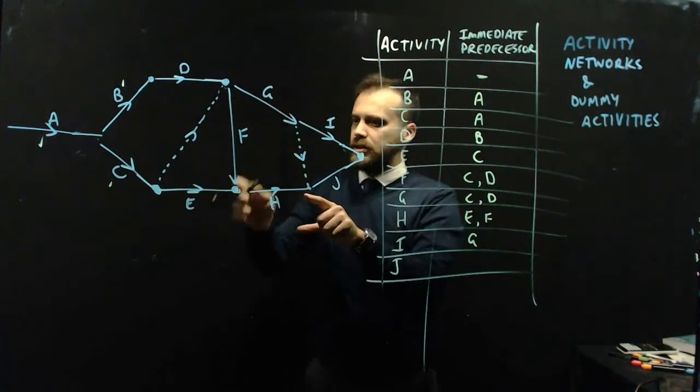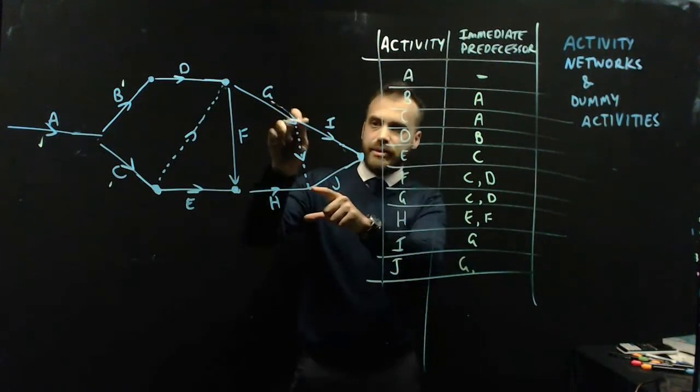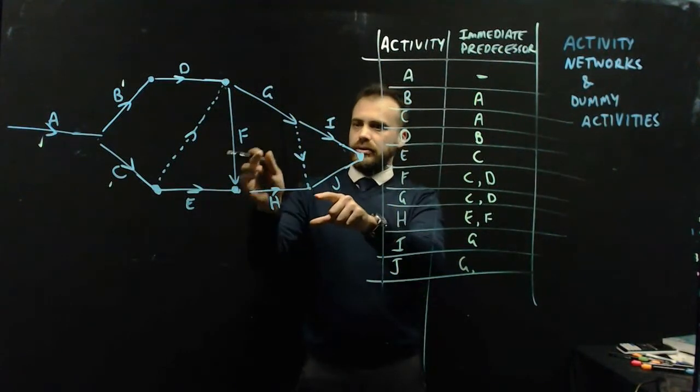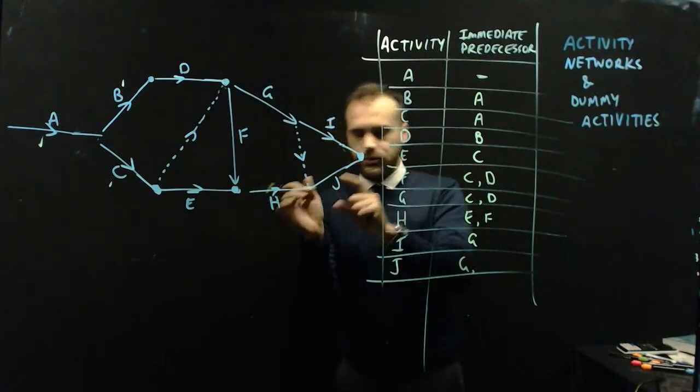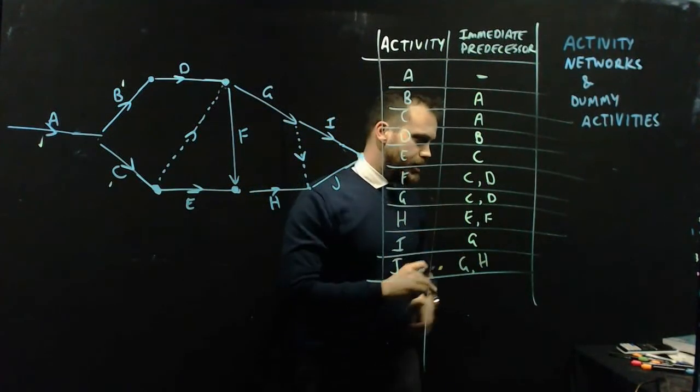Which means that J has an immediate predecessor of H and the dummy activity of G. Which is G. So two here. G which is the dummy activity, and H which is this one here.